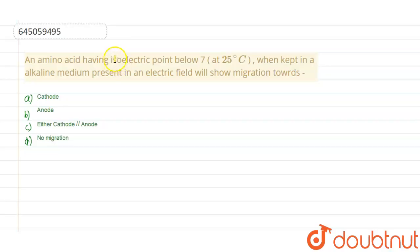Hello students, the question is: an amino acid having isoelectric point below 7 at 25 degrees Celsius when kept in an alkaline medium present in an electric field will show migration towards A) cathode, B) anode, C) either cathode or anode, D) no migration.